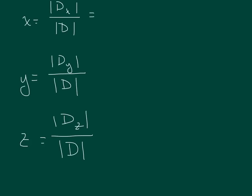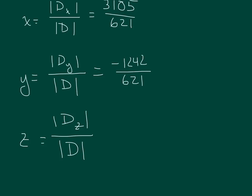If you find the determinant of the D sub x matrix, it equals 3,105. The determinant of the coefficient matrix equals 621. The determinant of the D sub y matrix is negative 1,242, and the determinant of the coefficient matrix stays the same at 621. The determinant of the D sub z matrix is 2,484.